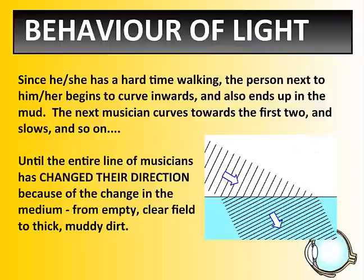If that analogy doesn't make sense, think of it this way: when a laser beam travels from the air in the classroom into a fish tank, it strikes the surface of the water and is slightly slowed because the water is more dense than the air around it. So because it is slowed, it slightly changes direction — it refracts — and we see that bending of light.